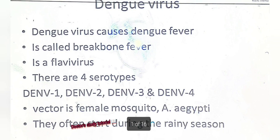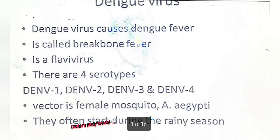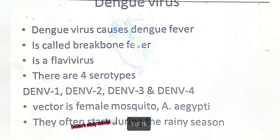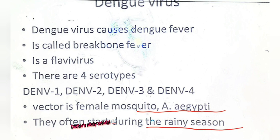There are four serotypes: dengue 1, dengue 2, dengue 3, and dengue 4. It is a viva question. The vector is the female mosquito Aedes aegypti. They often start during the rainy season.